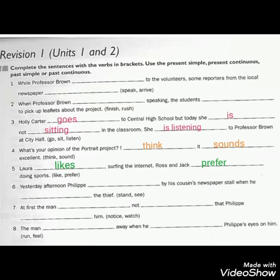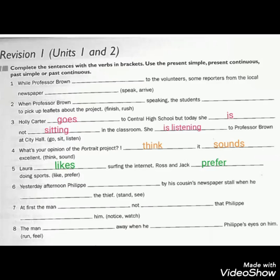Holy Carter goes to Central High School. We put the verb GO with ES because Holy Carter is a singular noun. But today, because we have the keyword 'today', we use present continuous: She is not sitting in the classroom — she is listening to Professor Brown. We put ES after the pronoun she because it is a singular pronoun, and we add ING to SITTING and LISTENING.